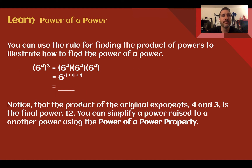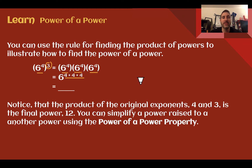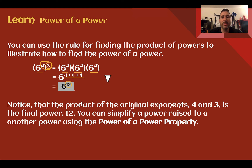Let's learn power of a power. You can use the rule for finding the product of powers to illustrate how to find the power of a power. For example, if we had 6 to the 4th power and I wanted to raise that to another power, I can show that it's the power multiplied the number of times by the exponent. Using my product of powers from Lesson 2, if I multiply things with the same base I add the exponents, so I get 6 to the 4 plus 4 plus 4, which is 6 to the 12th. Notice that the product of the original exponents — 4 and 3 — gives us our final power of 12.